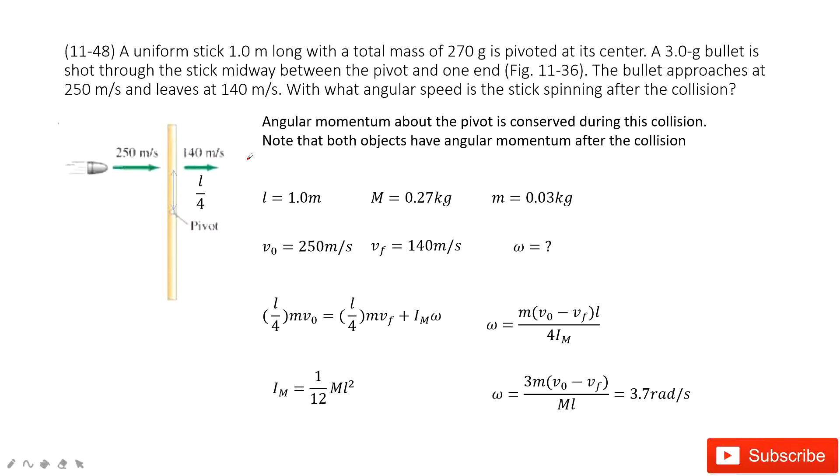Chapter 11 is about angular momentum. You can see with these uniform sticks, the length is given, mass is given, and then we have a small bullet. The mass is given. The bullet just hits this stick and then the initial velocity and final velocity are given.